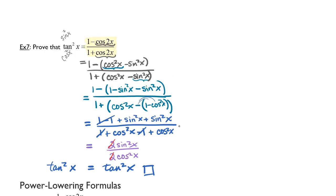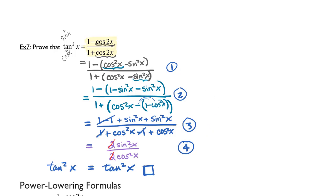I want to point out here that I am using 1, 2, 3, 4 steps before I get to the identity. It's very important to make sure that you can show how you are replacing your different terms on either side of the equal sign based on which one you pick, so that you can show that you understand how the substitutions are working. You should never just go from the statement given to tangent squared x equals tangent squared x — you have to show all your steps.